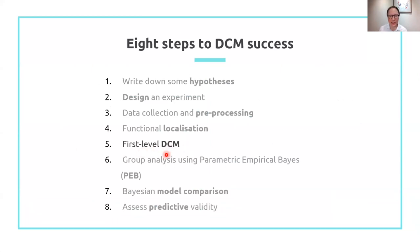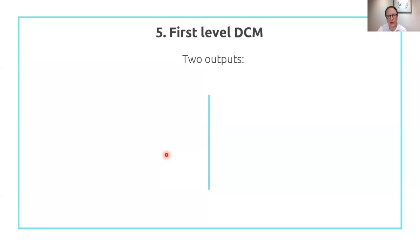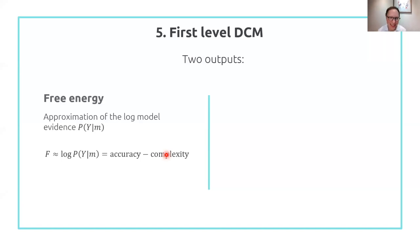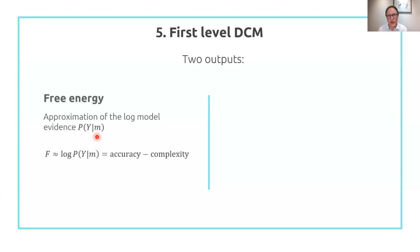Let's talk about the first level DCM analysis. A first level DCM analysis has got two outputs. One output, as Edda mentioned, is the free energy. This can get a bit technical if you're reading papers. Free energy is a concept that comes from statistical physics — that's why it's called an energy. In machine learning, it has a different name: it's called the evidence lower bound, or ELBO. The free energy is an approximation of the log of the model evidence — the probability of the data given the model — and it's the score we use for quantifying the goodness of a model.